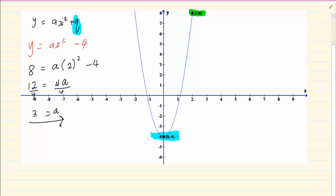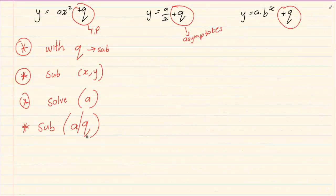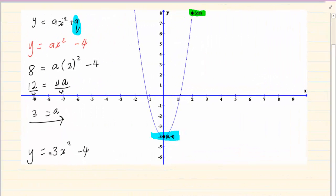Now, when you do this, you have to rewrite the equation. So the equation is y equals 3x squared minus 4. Remember when I said rewrite it, you only rewrite a and q. So we've got y equals 3x squared minus 4.